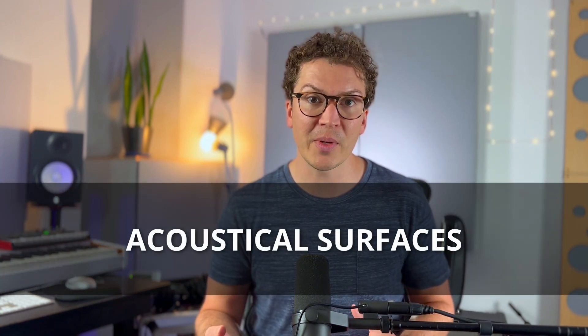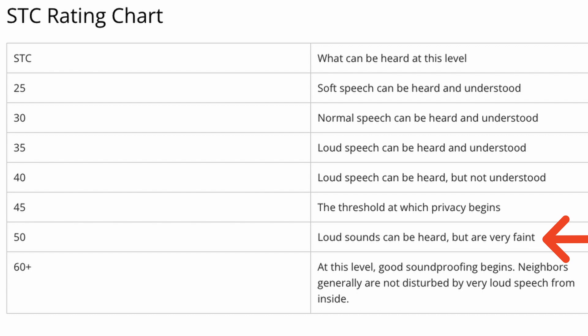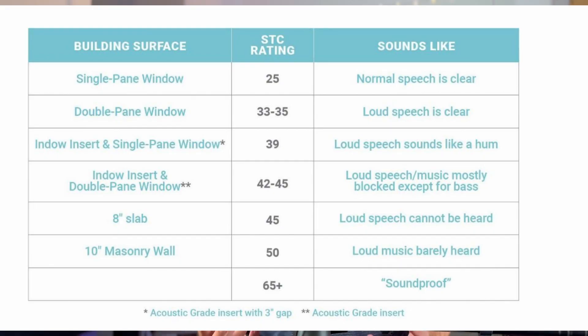Let's look at some charts from two different companies trying to explain what an STC rating sounds like with human speech. Acoustical Surfaces, a soundproofing company, says that at an STC of 25 you can hear soft speech through the wall, and at an STC of 50 you can slightly hear loud speech but it is very faint. Here's another chart by a company called Indow. Indow provides a window insert that can help you soundproof a window more efficiently and cheaply. Their chart is similar to the last one, but it also shows that there's no hard science behind what an STC rating means versus the actual outcome of sounds allowed through that wall.